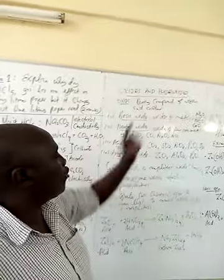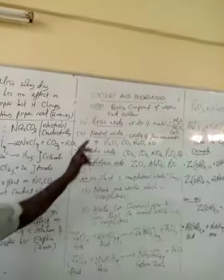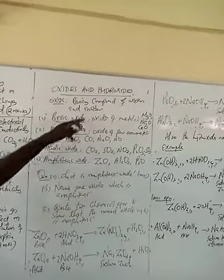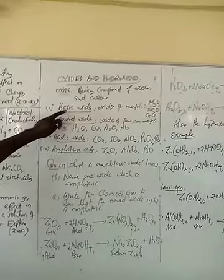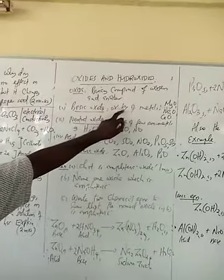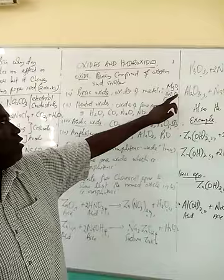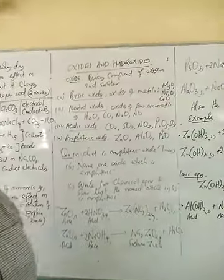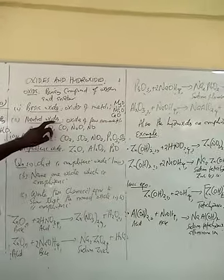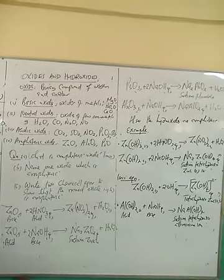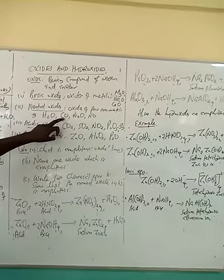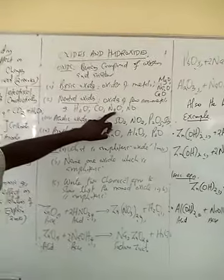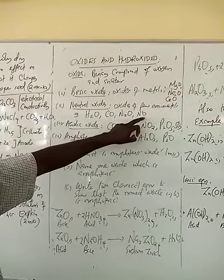Let us look at oxides and hydroxides. An oxide is a binary compound of oxygen with another element. We have got four types of oxides. We have got basic oxides — these are metallic oxides, for example magnesium oxide, sodium oxide, calcium oxide. We have got also neutral oxides — these are oxides of fuels and minerals that do not have any acidic or basic properties. Examples are water, carbon monoxide, nitrogen monoxide and nitrogen dioxide.